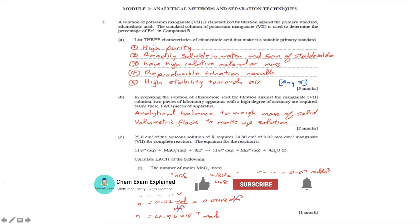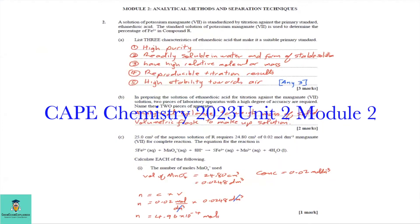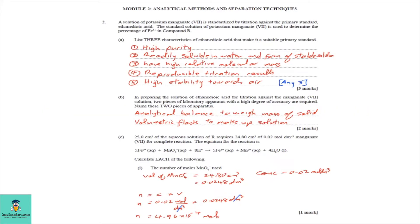Welcome to ChemExamExplained. In today's video we will be looking at Cape Chemistry 2023 Unit 2 Module 2, Analytical Methods and Separation Techniques. Number 2: A solution of potassium manganate 7 is standardized by titration against the primary standard ethane dioic acid. The standard solution of potassium manganate 7 is used to determine the percentage of iron 2 in compound R. Part A: List three characteristics of ethane dioic acid that make it a suitable primary standard.